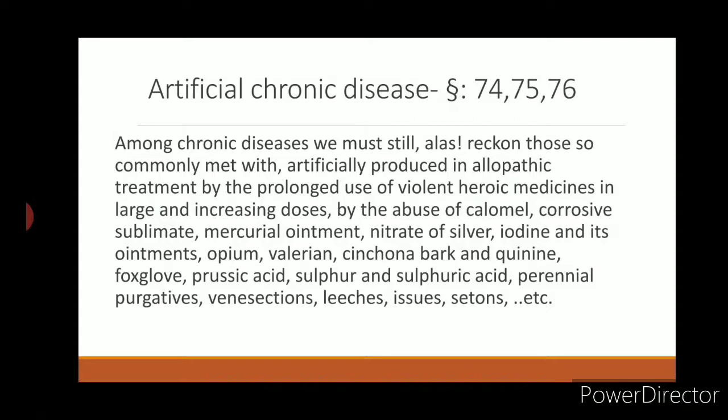Starting with the first — artificial chronic disease. These are explained by master Hahnemann in aphorisms 74, 75, and 76 of the fifth edition of the Organon of Medicine. According to Hahnemann, these are diseases commonly produced by allopathic treatment through the prolonged use of violent heroic medicines in large and increasing doses. Examples include abuse of calomel, corrosive sublimate, mercurial ointment, nitrate of silver, iodine and its ointments.